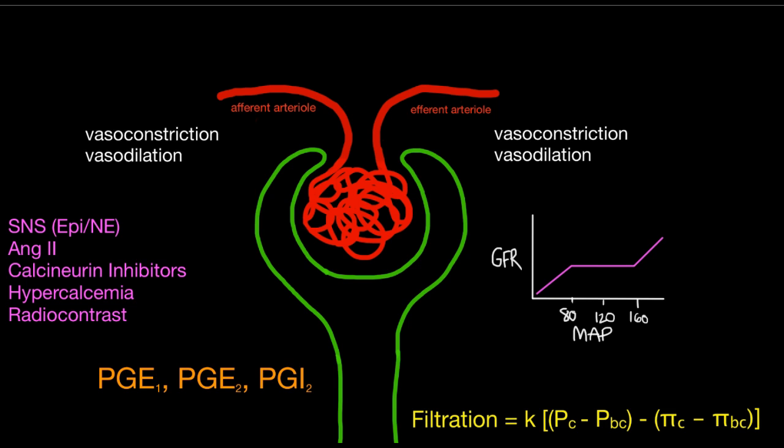Locally produced prostaglandins — PGE1, PGE2, PGI2 — vasodilate the afferent arteriole to maintain good inflow into the glomerulus. There are many circulating hormones that cause vasoconstriction: sympathetic nerve activity, angiotensin II, and vasopressin. We don't always want to vasoconstrict the afferent arteriole, because PC depends on it. So these vasodilatory prostaglandins are critical to preserve GFR, especially in the setting of auto-regulation.